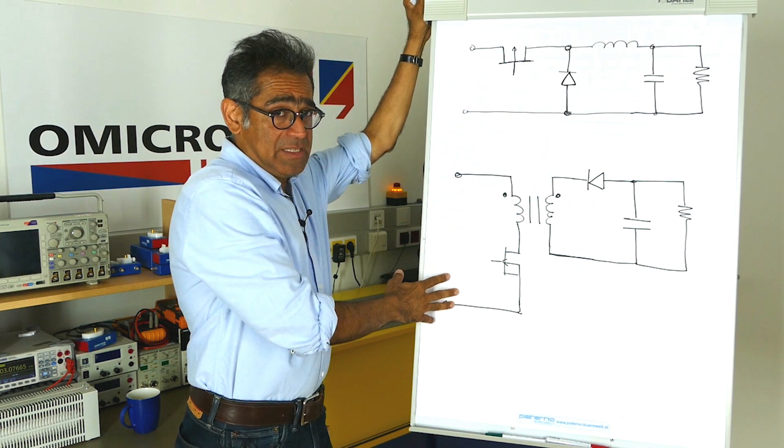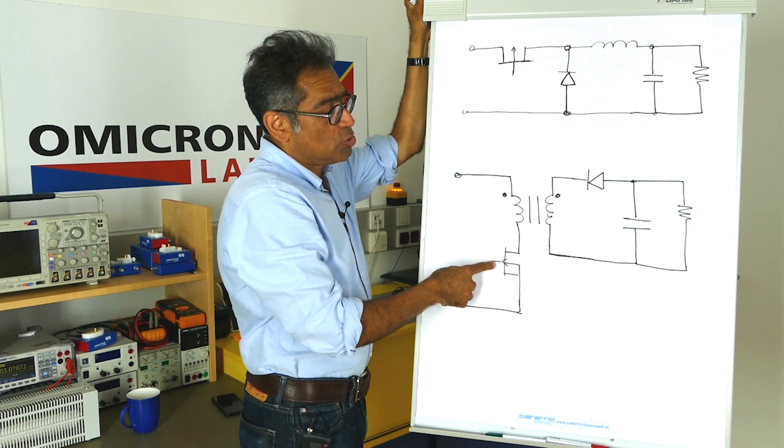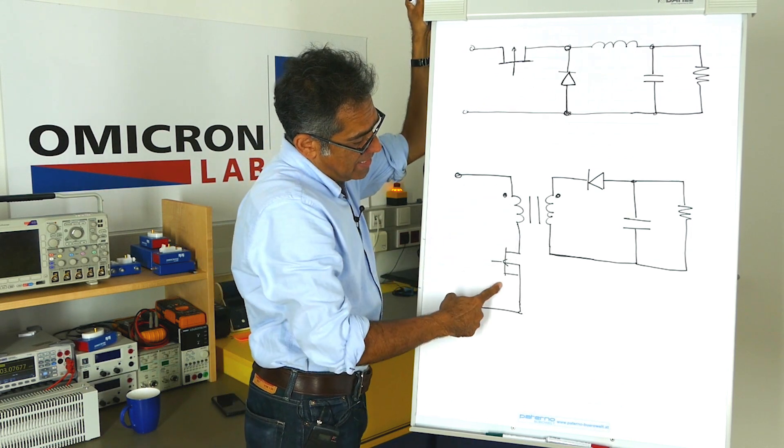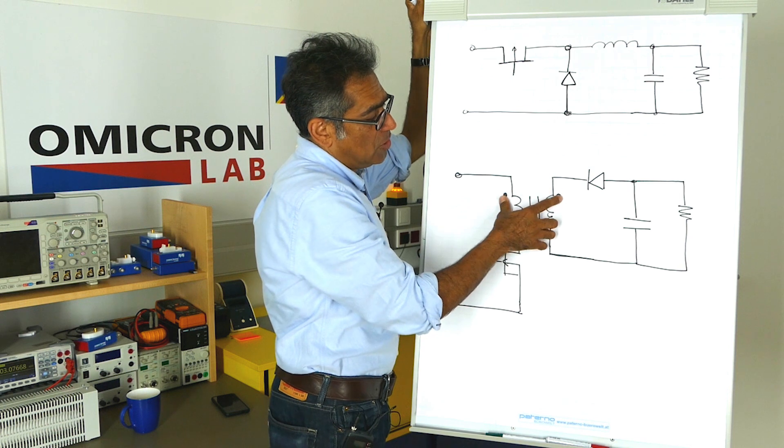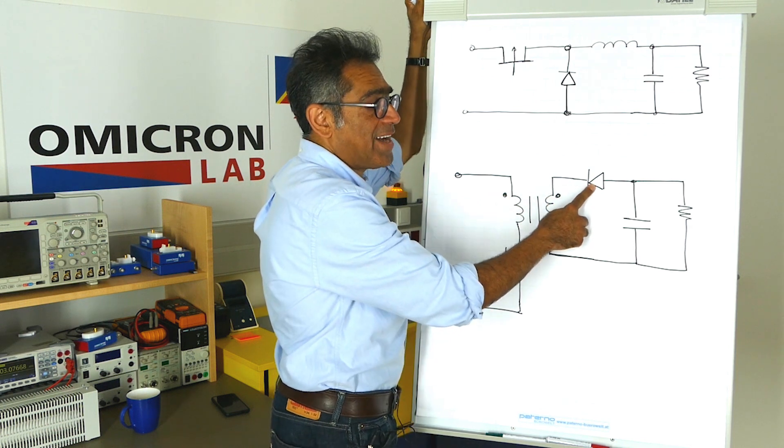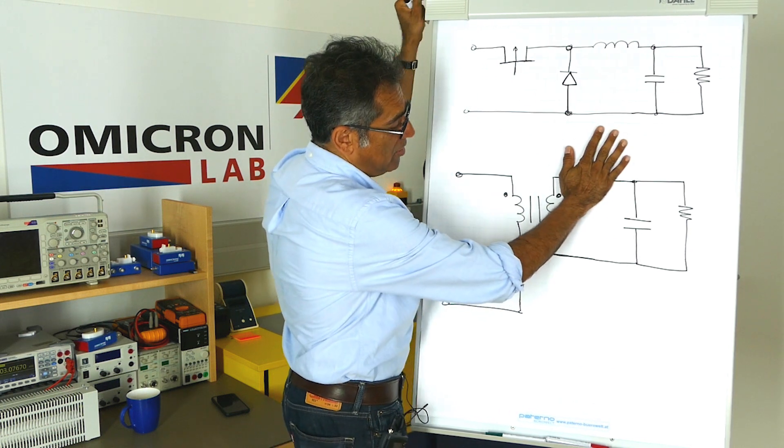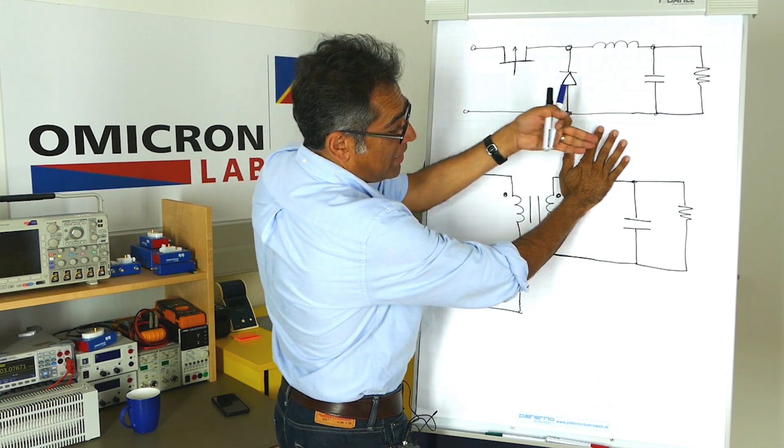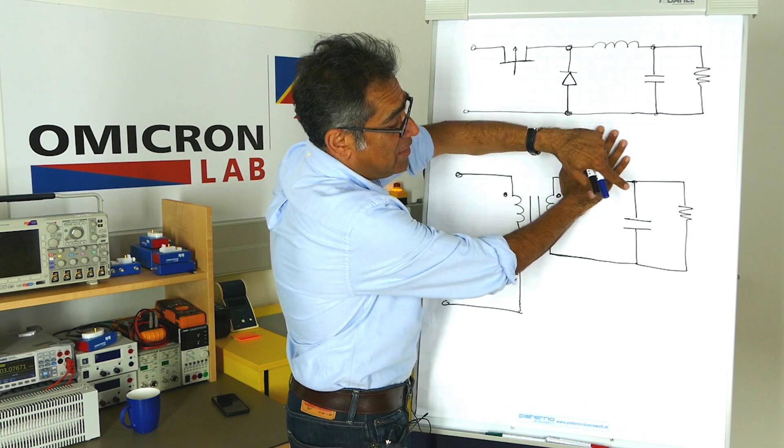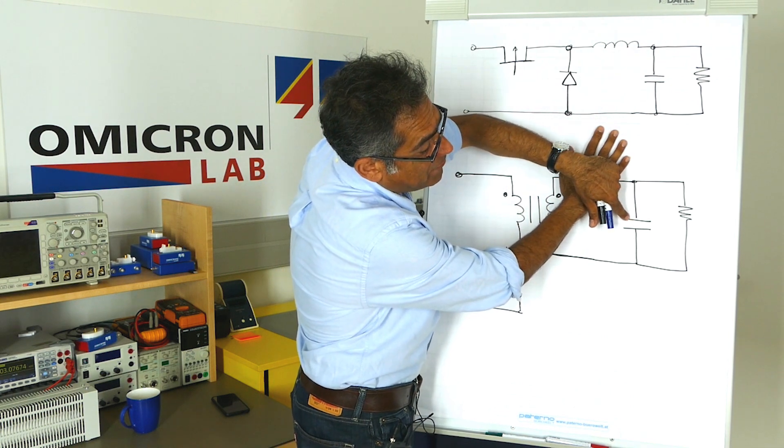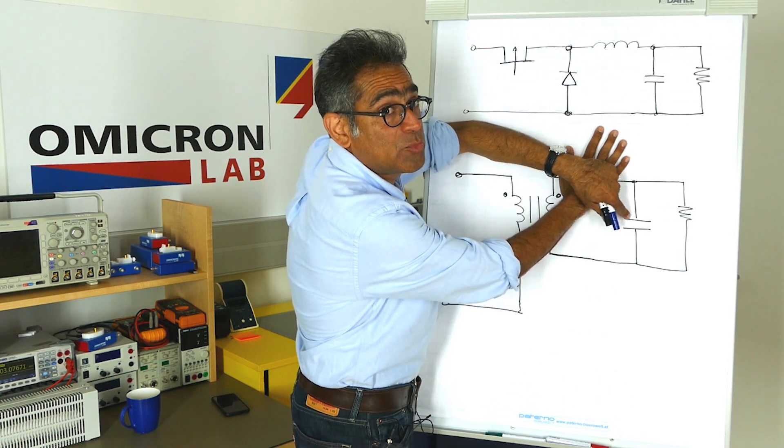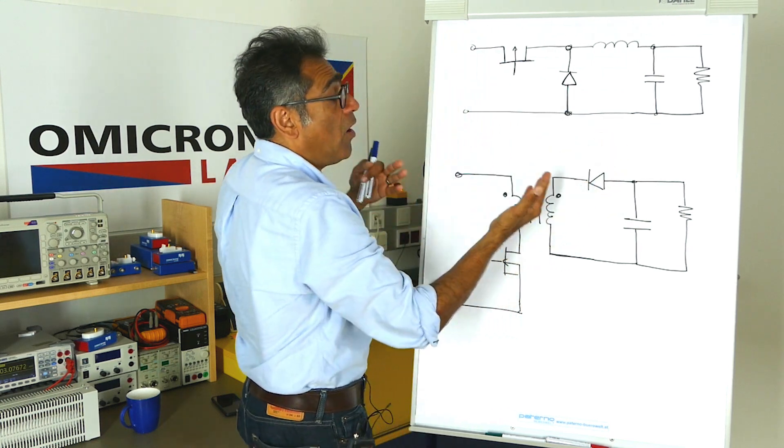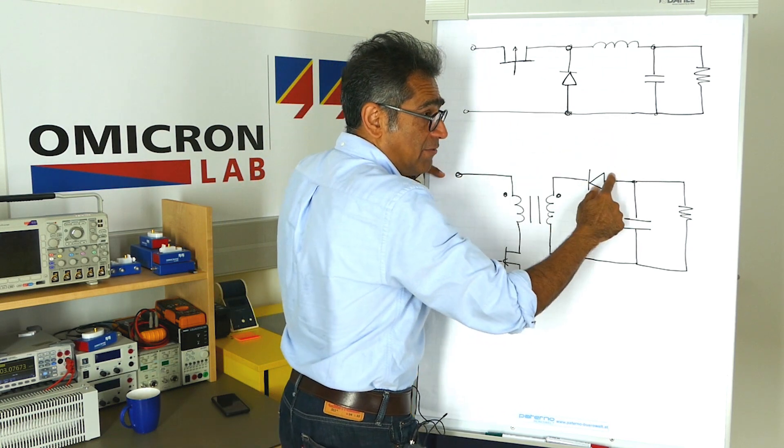The flyback converter, however, is a bit different. When you turn the switch on, the current flows here, and if you look at this dot convention, it will make this diode in fact reverse biased. So during the on period, you are not delivering any power from the input to the output. The power being delivered is from the energy stored in the output capacitor from previous cycles. So during the on period there is no direct delivery.